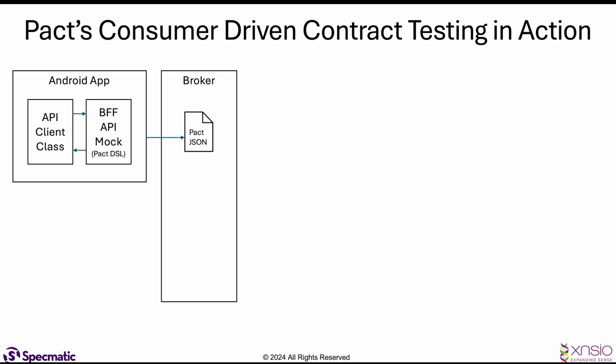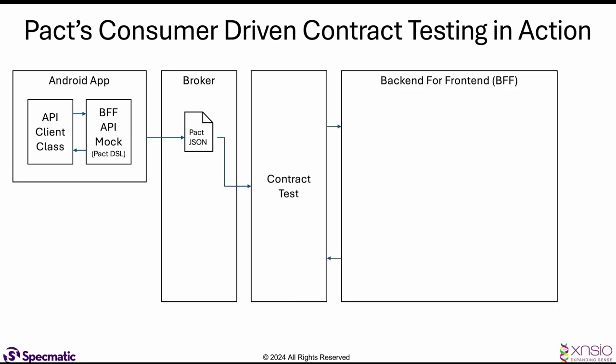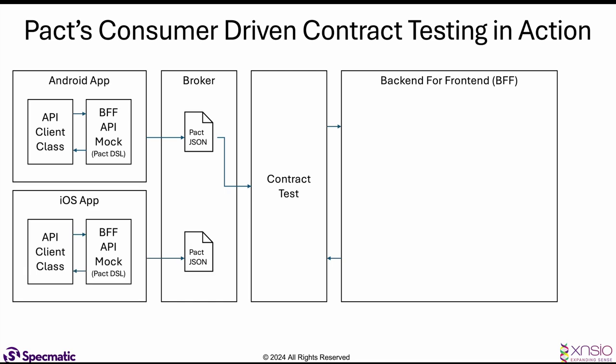Let's say we somehow handle that and keep the broker up. The PACT JSON is used to run the contract test against the provider — in this case, the backend-for-frontend application. The contract for the BFF is not completely defined by one consumer; it may have multiple consumers. In our use case, we also had an iOS application which would generate its own PACT JSON based on what it expects the BFF to behave like. So the contract for the BFF is a cumulative effect of all PACT JSONs from individual consumers.